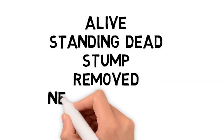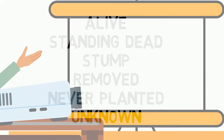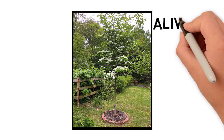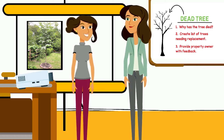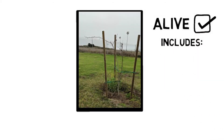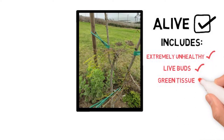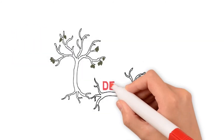The mortality status of this tree is alive, which is fairly obvious because it has green leaves. But what about trees that are extremely unhealthy and might even look like they're dying? Extremely unhealthy trees — such as those with no leaves but live buds or green tissue under the bark — are still included in the alive category.